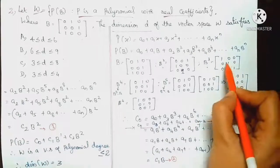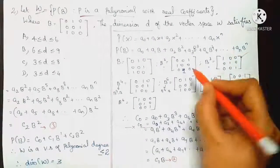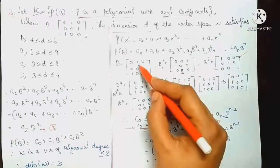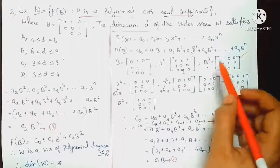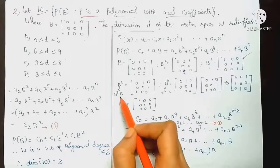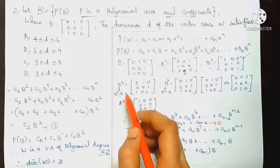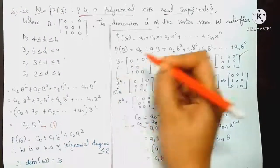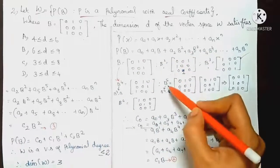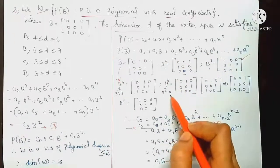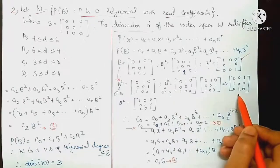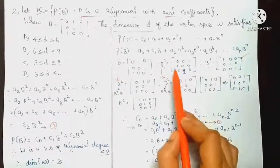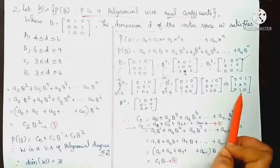B³ is used as the identity matrix. B² is computed as a specific matrix with entries 0,0,1; 1,0,0; 0,1,0. B⁴ is B³ times B, which equals B. So B power 4 and B are the same. Then B⁵ equals B² in value, and B⁶ equals the identity again.